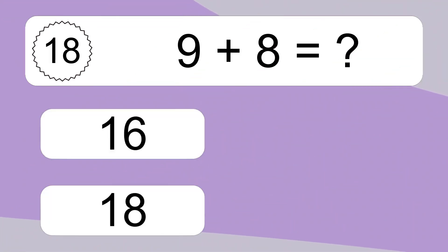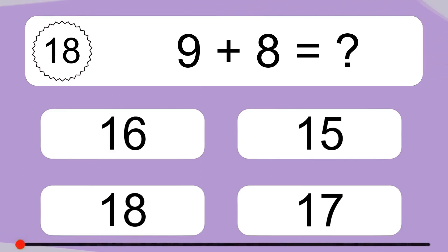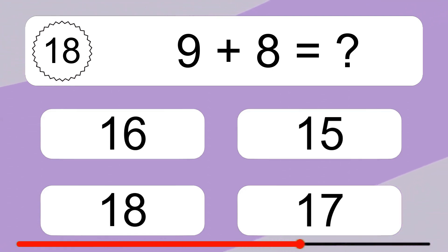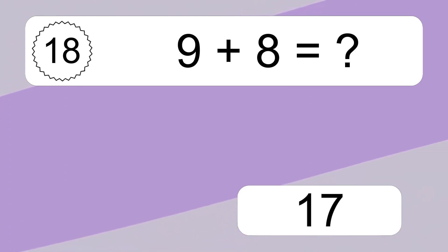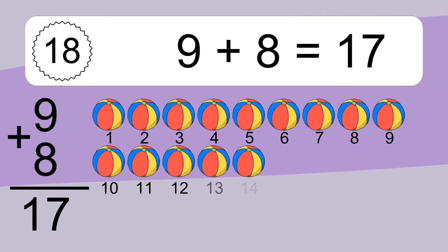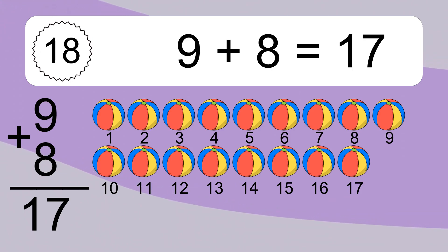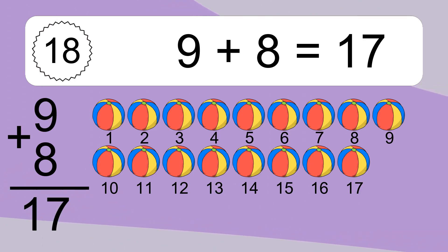9 plus 8 equals what? 9 plus 8 equals 17. Let's count it. 1, 2, 3, 4, 5, 6, 7, 8, 9, 10, 11, 12, 13, 14, 15, 16, 17.